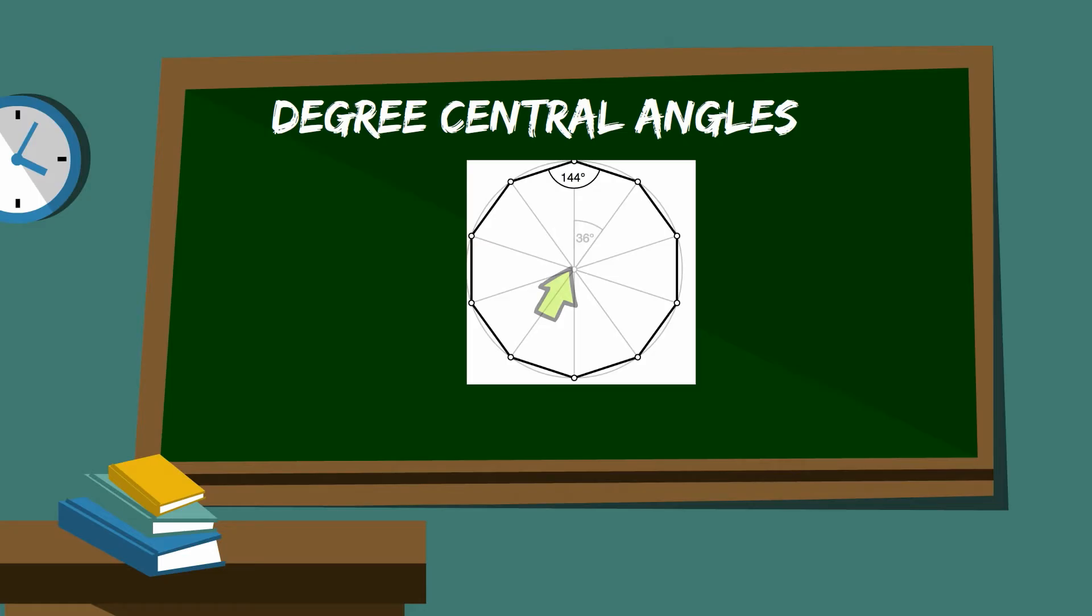You can find the measure of the central angle by dividing 360 by 10, which equals 36 degrees.